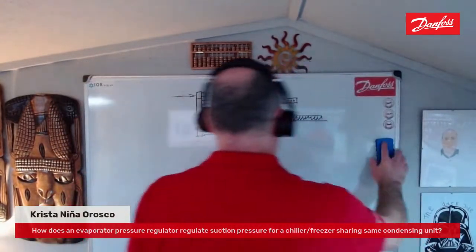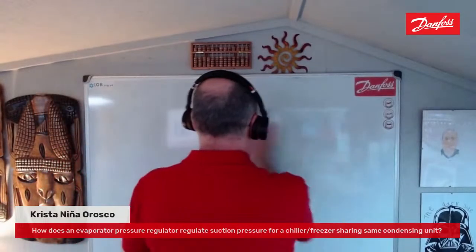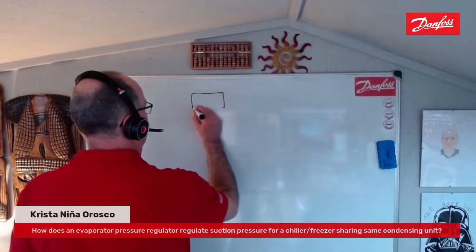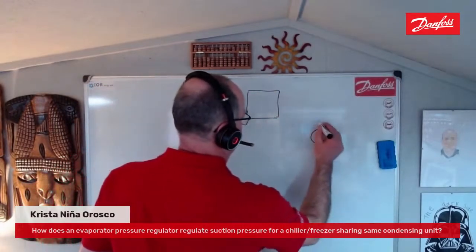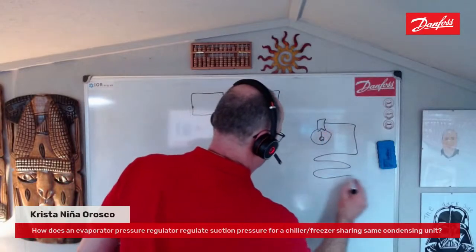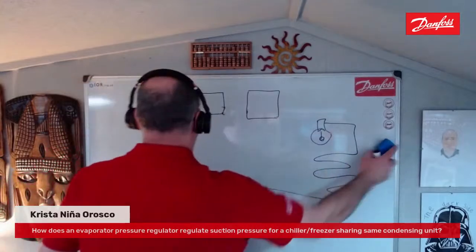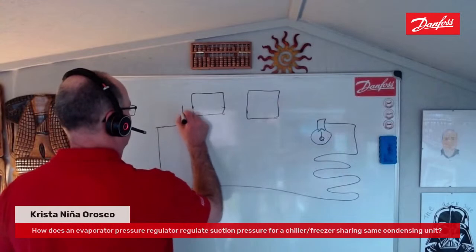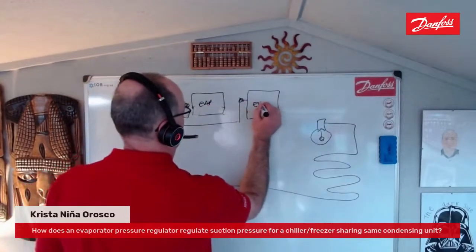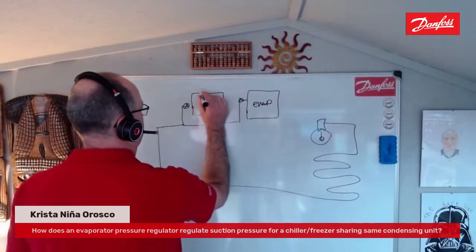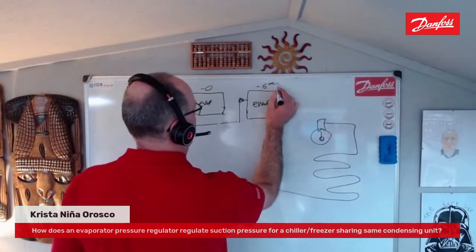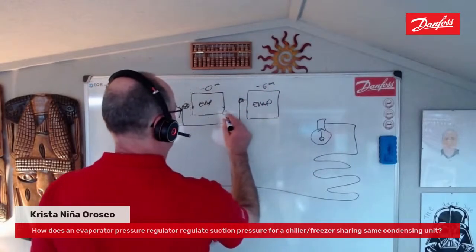Let me draw this on the whiteboard. We have two evaporators sharing a common compressor — let's say one wants to be at 0°C evaporating and the other at minus 6°C. They share a common suction line back to the compressor. The evaporator pressure regulator on the higher-temperature evaporator prevents its suction pressure from dropping below its set point, so the compressor can run at the lower pressure needed for the freezer circuit without pulling the chiller evaporator below its required temperature.